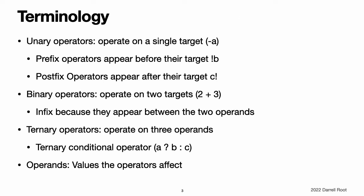Terminology. Operators are unary, binary, or ternary. Unary operators operate on a single target, such as minus a. Unary prefix operators appear immediately before their target, such as exclamation mark b, and unary postfix operators appear immediately after their target, such as c exclamation mark.